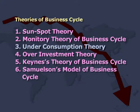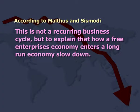The next is the under-consumption theory, proposed by Malthus and Sismondi in the year 1930. They said that consumption of goods and services should be reduced, and then only will sufficient demand for goods and services produced be generated. They also said that production should be done according to consumer demand; otherwise, overproduction brings recession in the market. This is not a recurring business cycle theory but explains how a free enterprise economy enters a long-run economic slowdown. They talked about the rich and the poor people of society, saying that richer people get more income in the form of real property and financial assets owned by themselves.